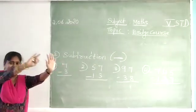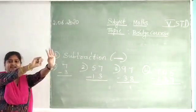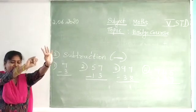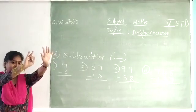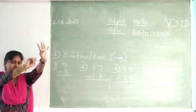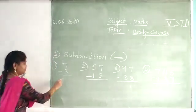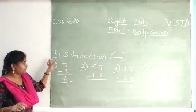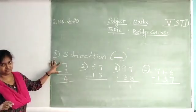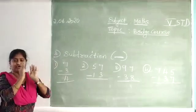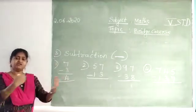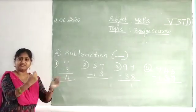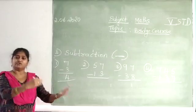Out of 7 gulab jamuns, your naughty brother is taking 3. So how many gulab jamuns are remaining for you? Only 4. So out of 7, your brother takes 3 — how many are remaining? Only 4. The answer is 4. Subtraction is nothing but: from what you are having, somebody is taking away or you are lending to them. That is the actual meaning of subtraction.